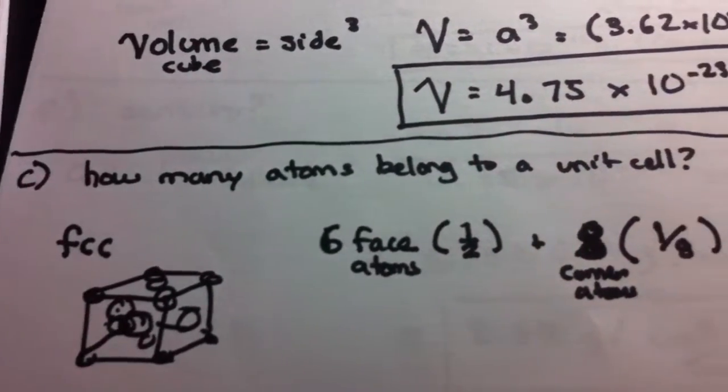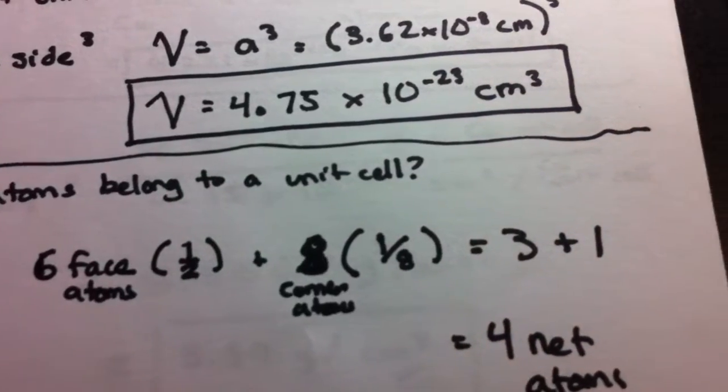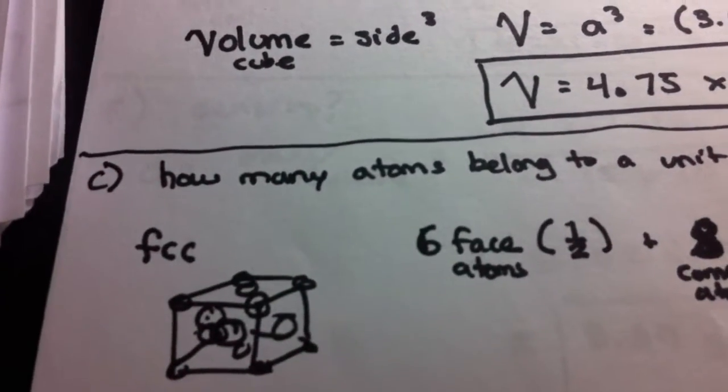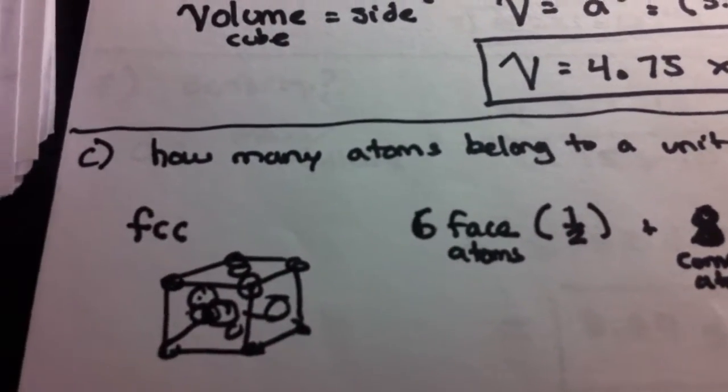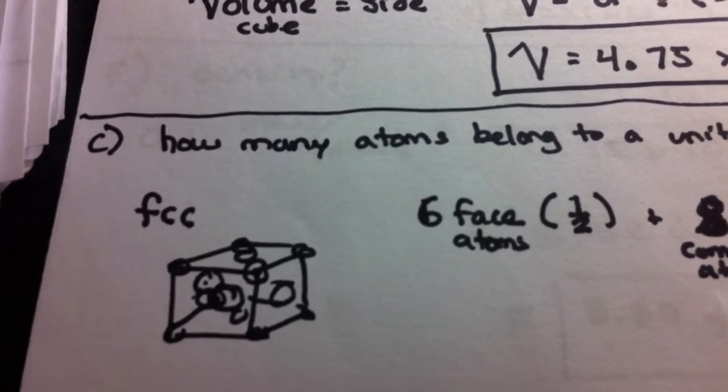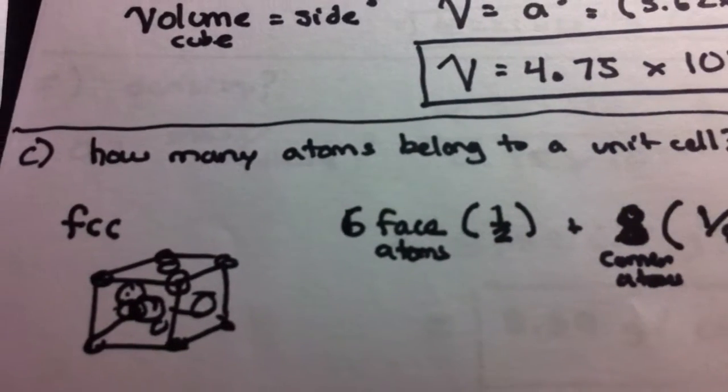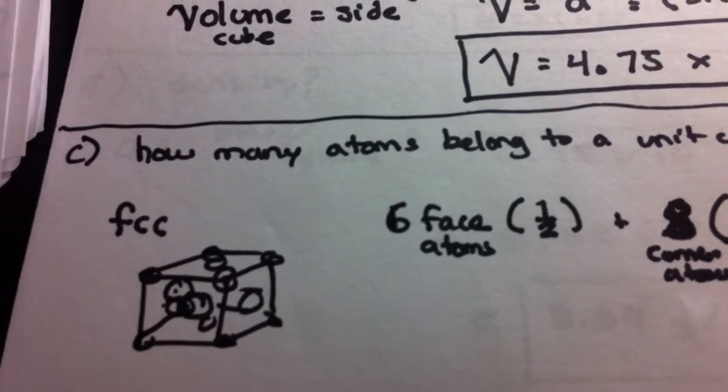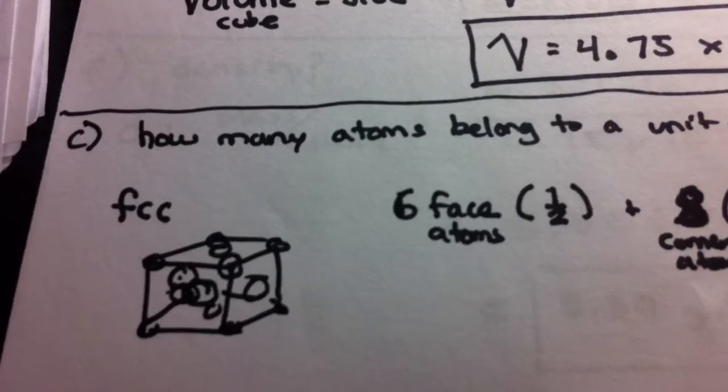Part C. How many atoms belong to a unit cell? So basically, this is something that should have been done already in your class. We have in a face centered cubic, six face atoms. So that's going to be one half of an atom for each one.